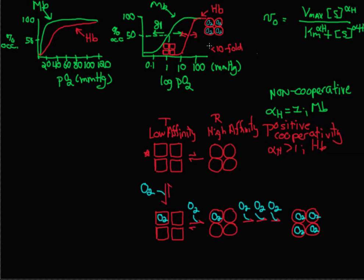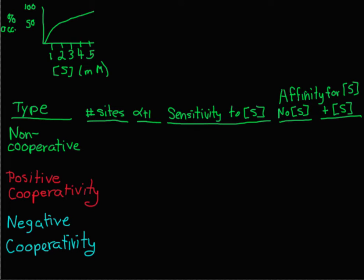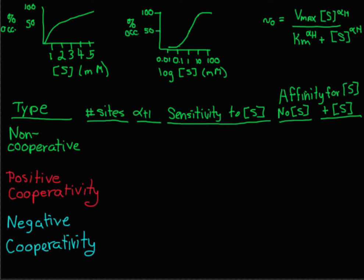So positive cooperativity increases the affinity for the substrate, and negative cooperativity decreases the affinity for the substrate. Let's review what we know about cooperativity. In non-cooperativity, you have that hyperbolic plot described by a Michaelis-Menten equation, and we can see the sensitivity on the log plot — it takes an 81-fold increase in substrate to go from 10% to 90% of Vmax. This gives us a Hill coefficient of 1, and in non-cooperativity there's only one catalytic site and no change in the affinity of the enzyme for substrate.